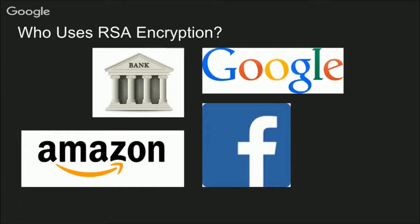Banks use it, Google, Amazon, Facebook. The modern world depends on RSA. If RSA were broken, all of your information stored on these websites could be stolen, which would have a catastrophic effect on both your security and the world's. So now that we know why RSA is so important, let's take a look at how it works.